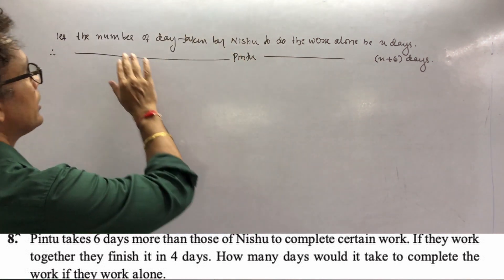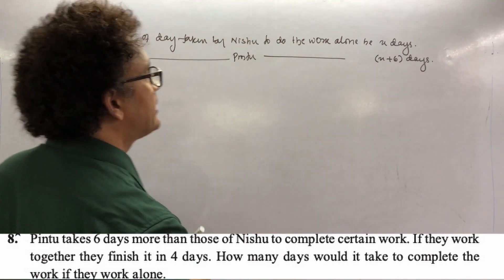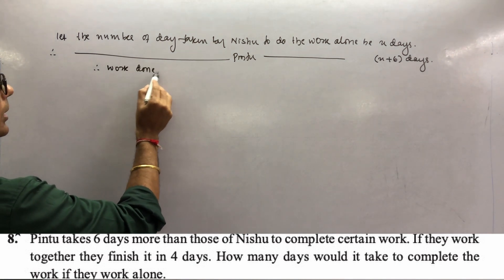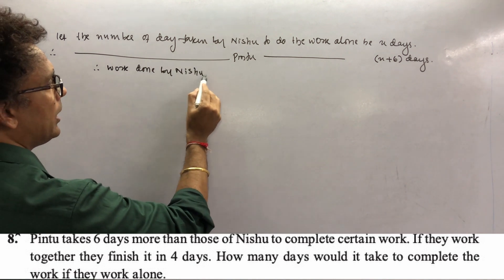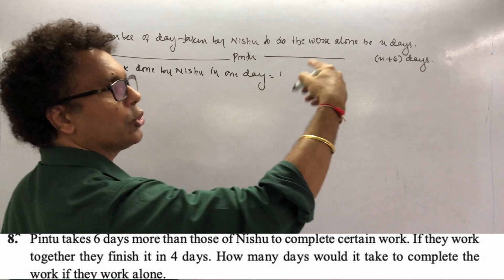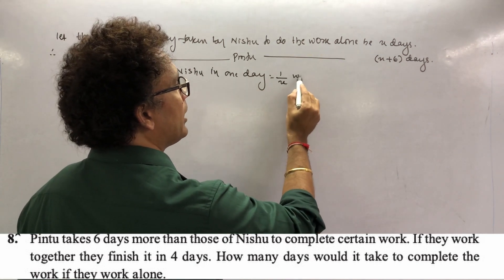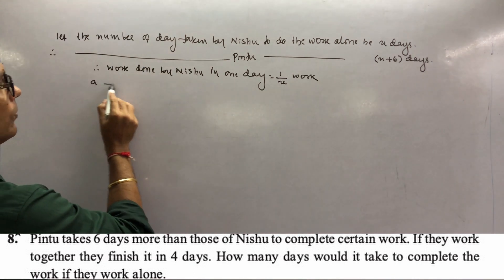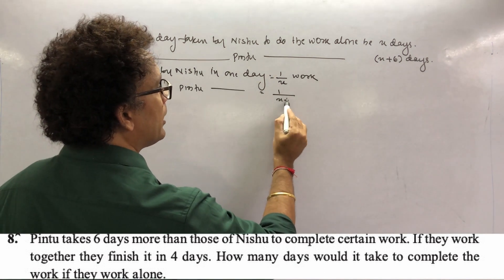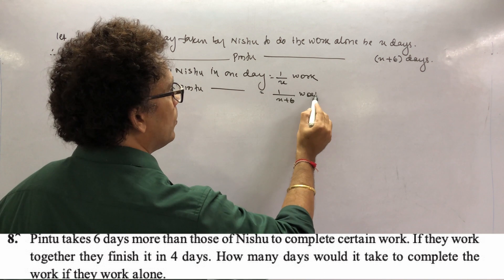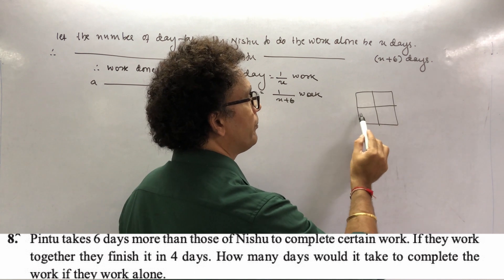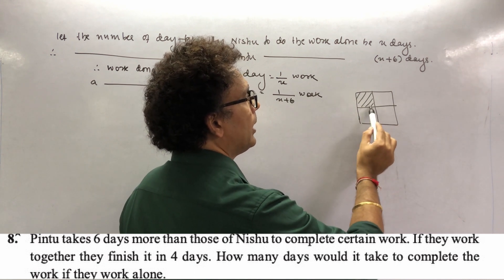So the work done by Nishu in one day is 1/x. If Nishu takes x days, he does 1/x work per day. Pintu takes x + 6 days, so Pintu does 1/(x + 6) work per day. Suppose you need to paint a wall: if I take 4 days, in one day I do 1/4 of it - that is 25%, or 1 upon 4.